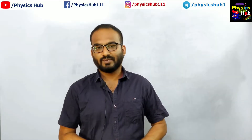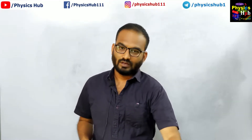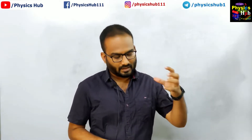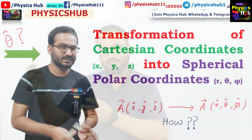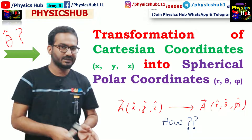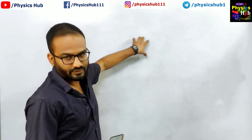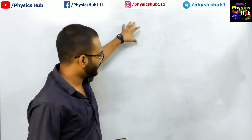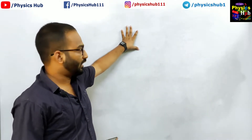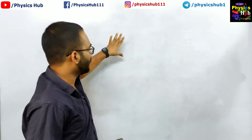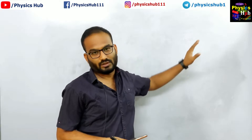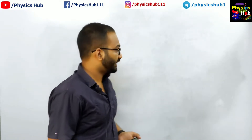Hello guys. A long time back I uploaded a video on how to convert the unit vectors in Cartesian coordinates to the unit vectors of spherical polar coordinates — x cap, y cap, z cap to r cap, theta cap, and phi cap. Today we will be doing a similar thing: how you can convert Cartesian coordinates into polar coordinates, specifically how to convert the unit vectors from Cartesian into polar coordinates. Polar coordinate is a two-dimensional coordinate system.